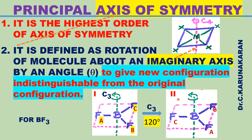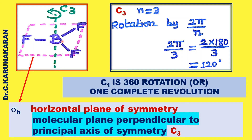This is the new configuration defined after C3 axis of rotation. The new configurations 1 and 2 are indistinguishable — they are not distinguishable because the fluorine atoms are similar. All the fluorine atoms are similar; therefore the new configuration is indistinguishable from the original configuration. In BF3 molecule, this is the principal axis of symmetry, C3.